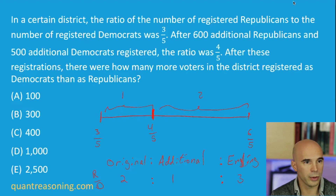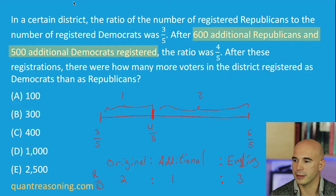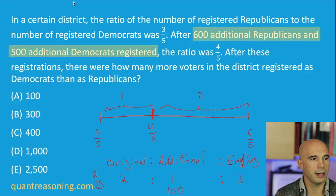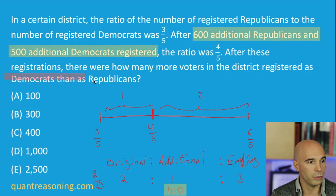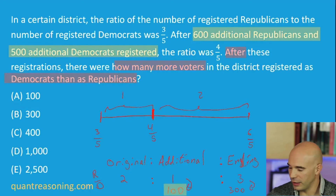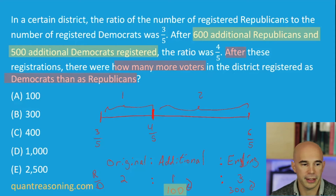Where did the 6 to 5 ratio come from? It came from a scale factor of 100 for the additional ratio — that's how we arrived at 600 boys and 500 girls. And the question is concerned with the ending point: at closing, what was the difference in numbers — how many more voters after these registrations?